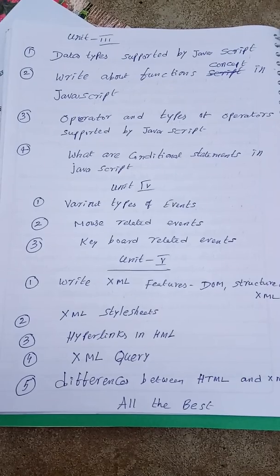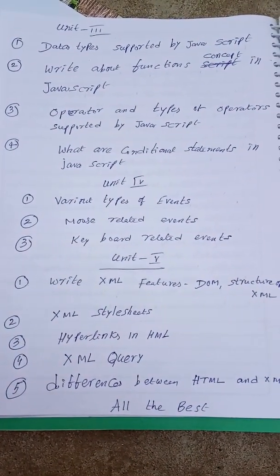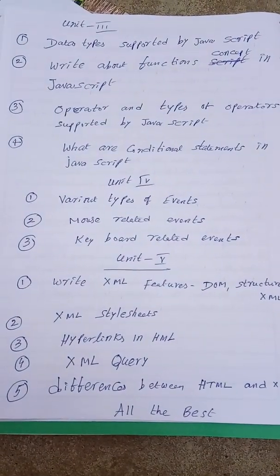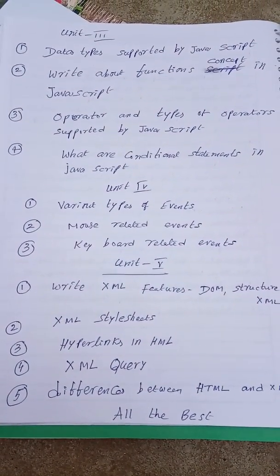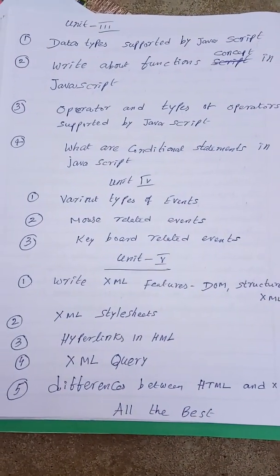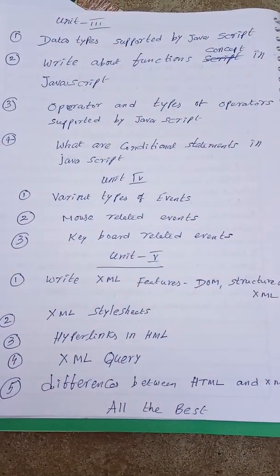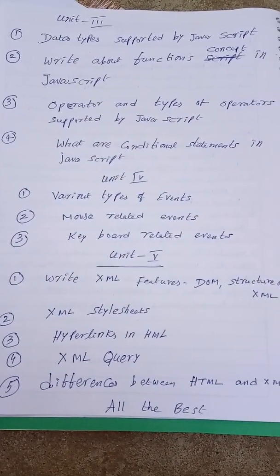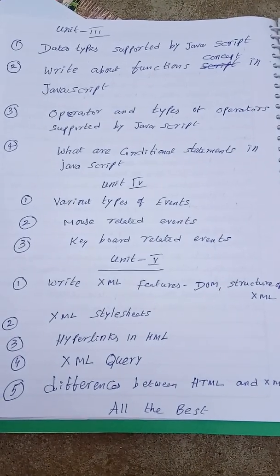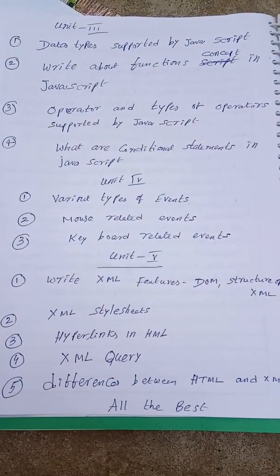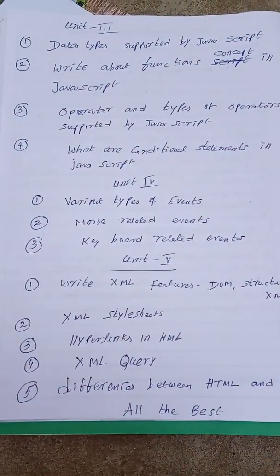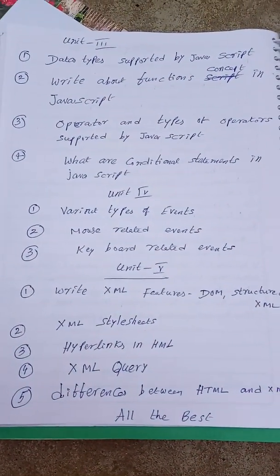My dear students, soon you will expect short answer questions — like data types supported by JavaScript. In this subject, unit number four and unit number five are a little bit easy. Very few questions are there in unit number four, like various types of events — mouse-related events and keyboard-related events. Wishing you all the best, my dear students. Hope this is useful to you.